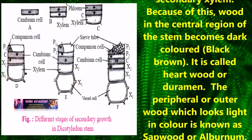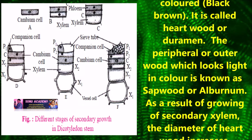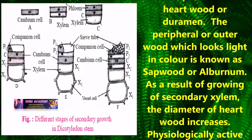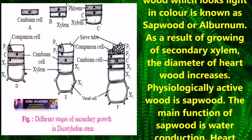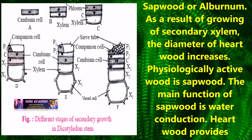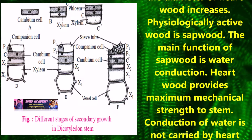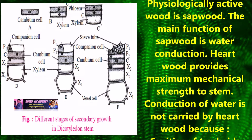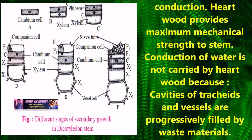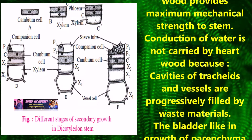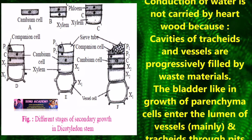The peripheral or outer wood which looks light in color is known as sapwood or alburnum. As secondary xylem grows, the diameter of heartwood increases. Physiologically active wood is sapwood, and its main function is water conduction. The heartwood provides maximum mechanical strength to the stem. Conduction of water is not carried by heartwood because cavities of tracheids and vessels are filled by waste material.